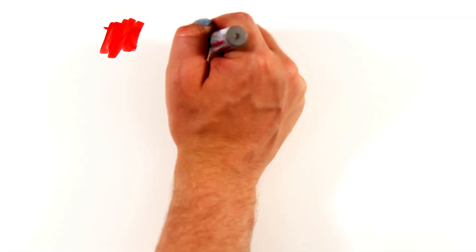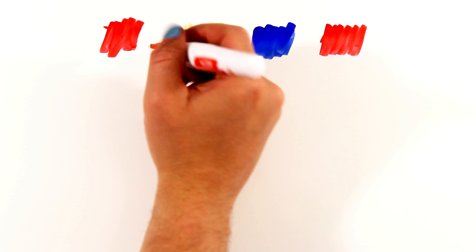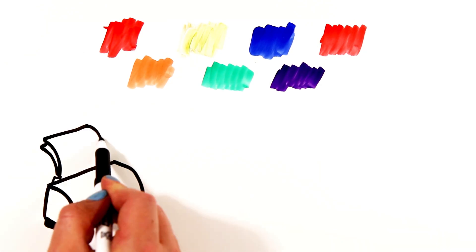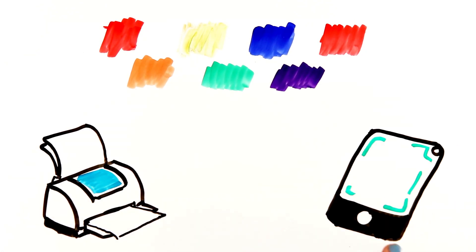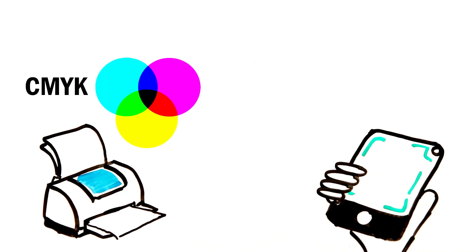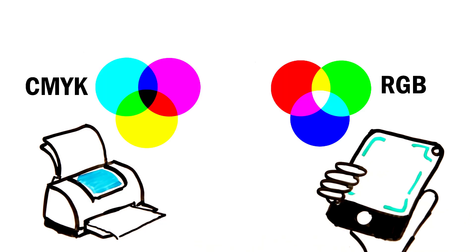Growing up, you likely learned about the primary colors red, yellow, and blue, and their respective complementary colors. But things are more complicated when you consider that the primary colors in your printer are magenta, yellow, and cyan, or that the screen you're watching this on uses red, green, and blue.